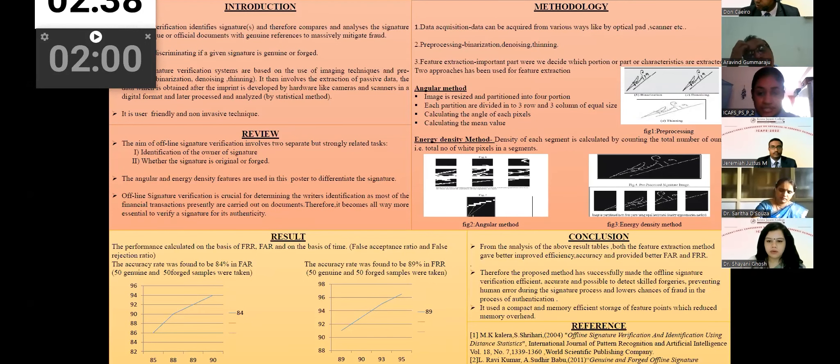The third is feature extraction. So in feature extraction, it is an important part where we decide which portion or part is extracted or which is useful for the system to perform and give optimum result. So there are two types of approaches being used. First one is angular method. Second one is energy density method. So what is angular method? In this method, the pre-processed image is resized and partitioned into four portions or cells using equal horizontal method. Then each partition is divided into three rows and three columns of equal size, making it a total of nine subcells. So like we take each subcell and calculate the angle of each pixel, then taking the mean value of it. So like this is repeated for all the subcells. By doing this, we determine the angle of a particular cell.